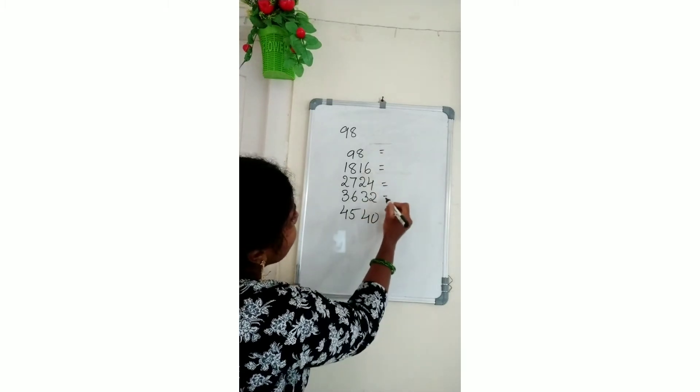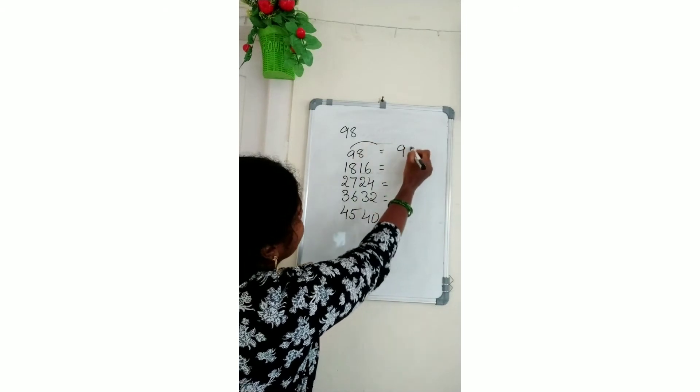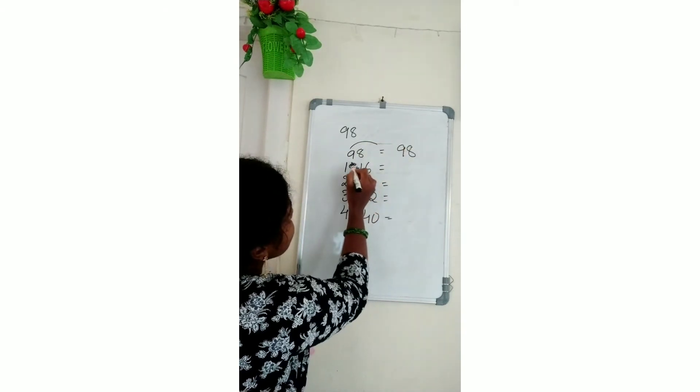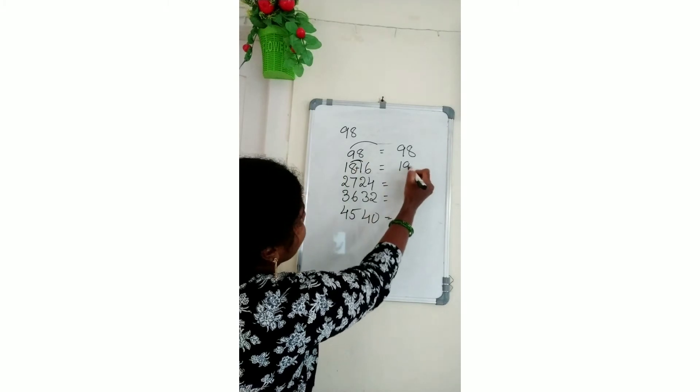Now the 98 table is: First write 98 once, 98 only. 18 plus 1, just add. Okay, 19. 1, 96.